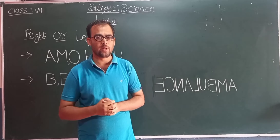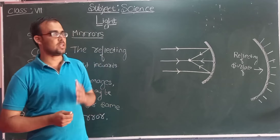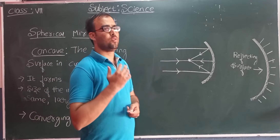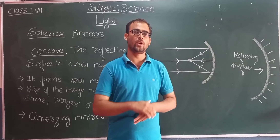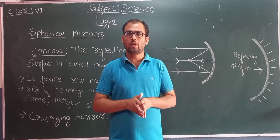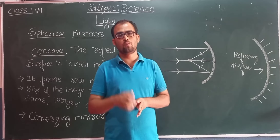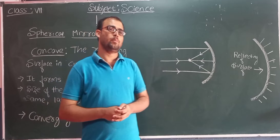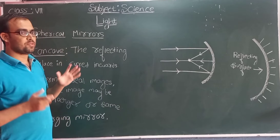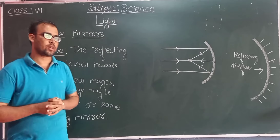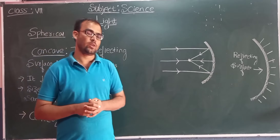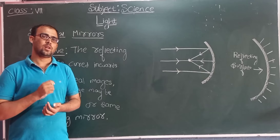Now let us discuss about spherical mirrors. Spherical mirrors are those which form part of a reflecting sphere. If you imagine a reflecting sphere, spherical mirrors form part of that reflecting sphere. There are two types of spherical mirror — one is concave and the other is convex.